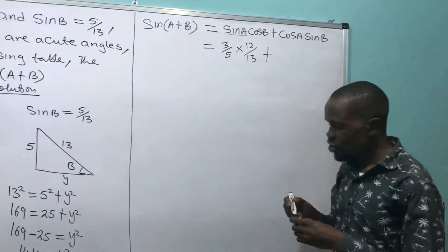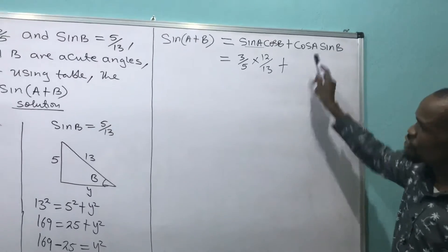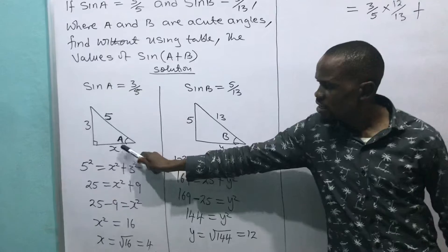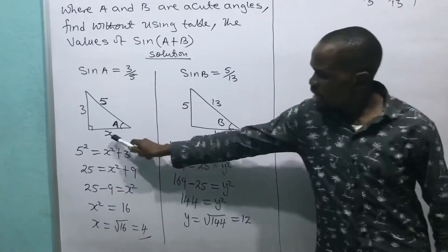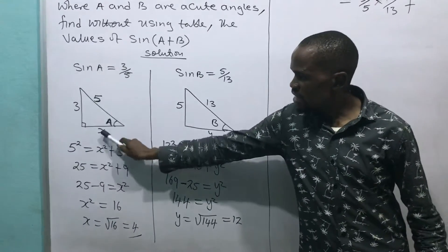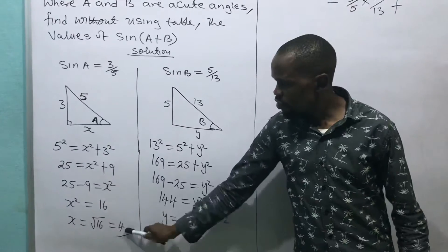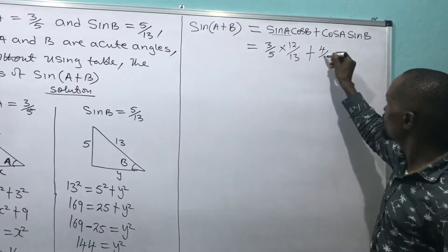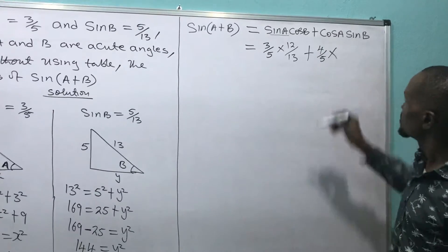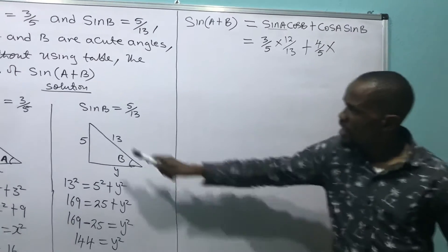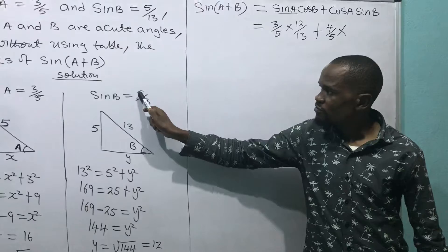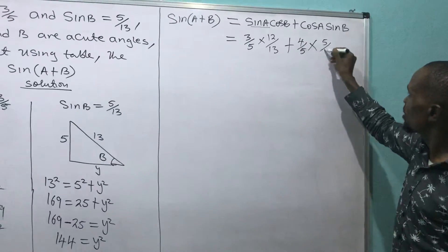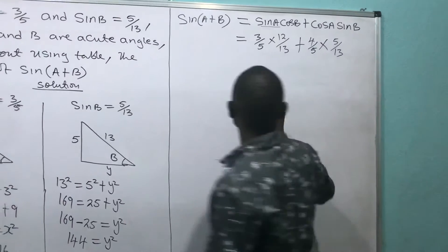Plus: for cos A, I go to triangle A. Cosine is adjacent over hypotenuse, which gives 4 over 5. And for sin B, I go to triangle B, which gives 5 over 13. So the expression becomes (3/5 × 12/13) + (4/5 × 5/13).